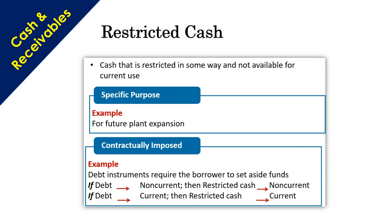Restricted cash is the amount of cash that is restricted in some way and not available for current use — it is restricted for a specific future purpose. For example, for future plant expansion, and sometimes they are contractually imposed. For example, debt instruments may require the borrower to set aside funds. If the debt is non-current, then that fund is also non-current, and if the debt is current, then the fund is also current.